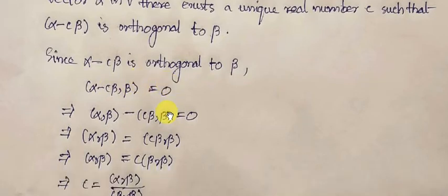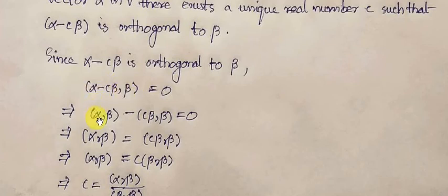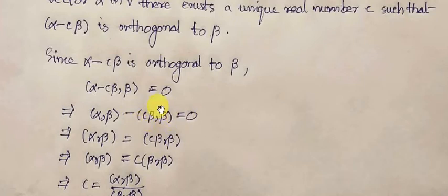From the linearity property, if we expand this, the left-hand side becomes: the inner product (alpha, beta) minus C*(beta, beta) equals zero. Taking the second term to the right-hand side gives us (alpha, beta) = C*(beta, beta).